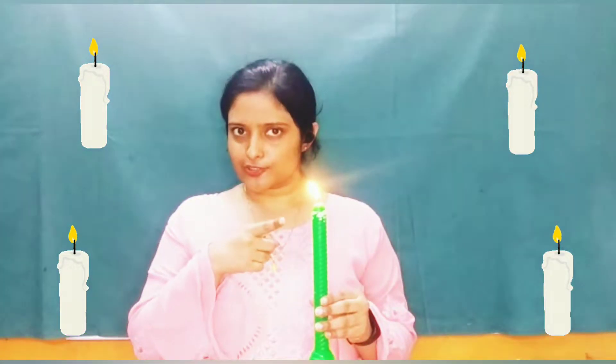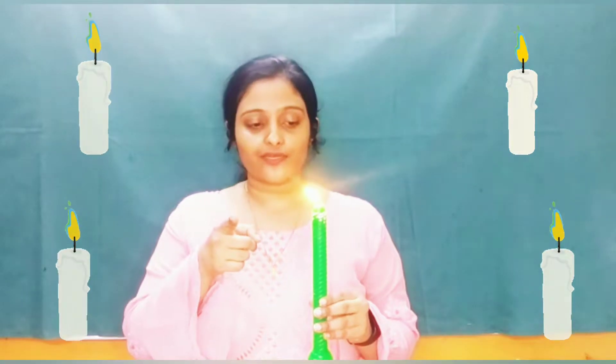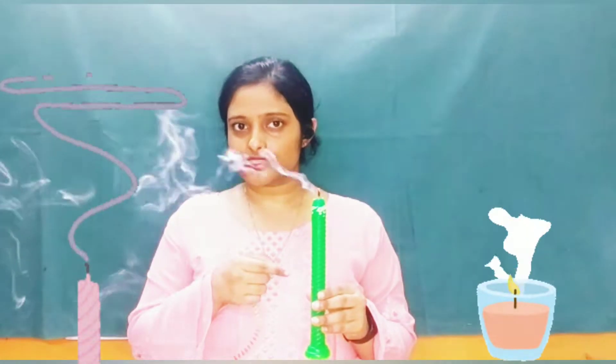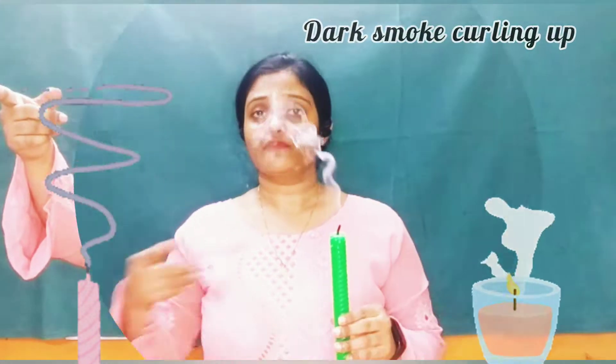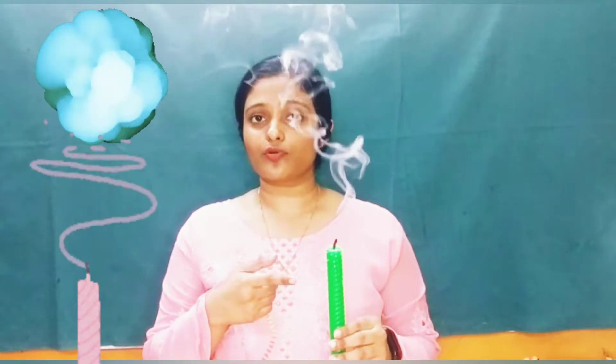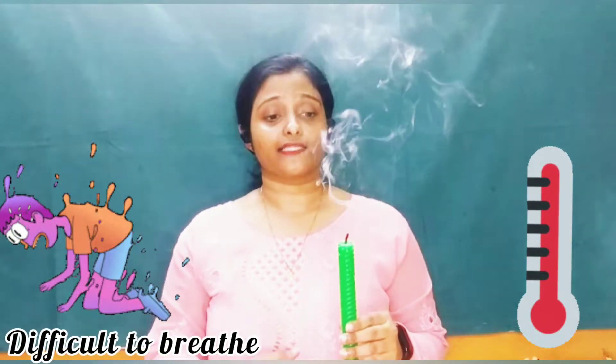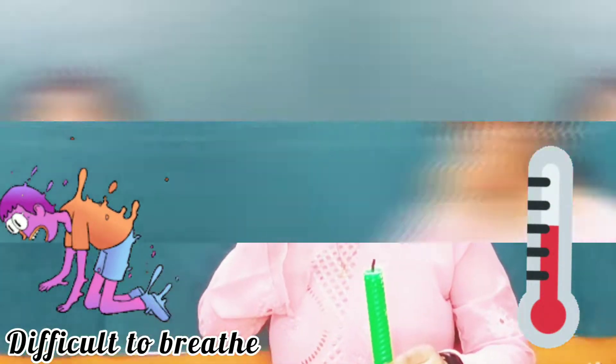Can you see this lit up can? It looks good, right? What can you see, children? Can you see the smoke, the dark smoke coming up? When the smoke increases in the air, it reduces the oxygen level in the air and it makes it difficult for us to breathe.